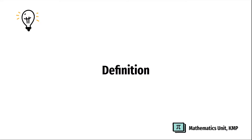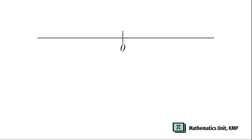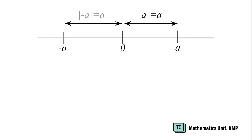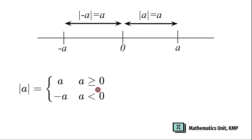What is absolute value? The absolute value of A represents the distance of a point A on the real number line from the origin. If A is on the right, then we can represent the distance by absolute value of A, which is equal to A. If A is on the left, shown by the negative sign, then the distance of negative A from the origin is represented by absolute of negative A, which is also equal to A. The absolute value of real number A can be defined as positive A for A greater than or equal to 0, and negative A for A less than 0, or absolute value of A equals the square root of A squared.